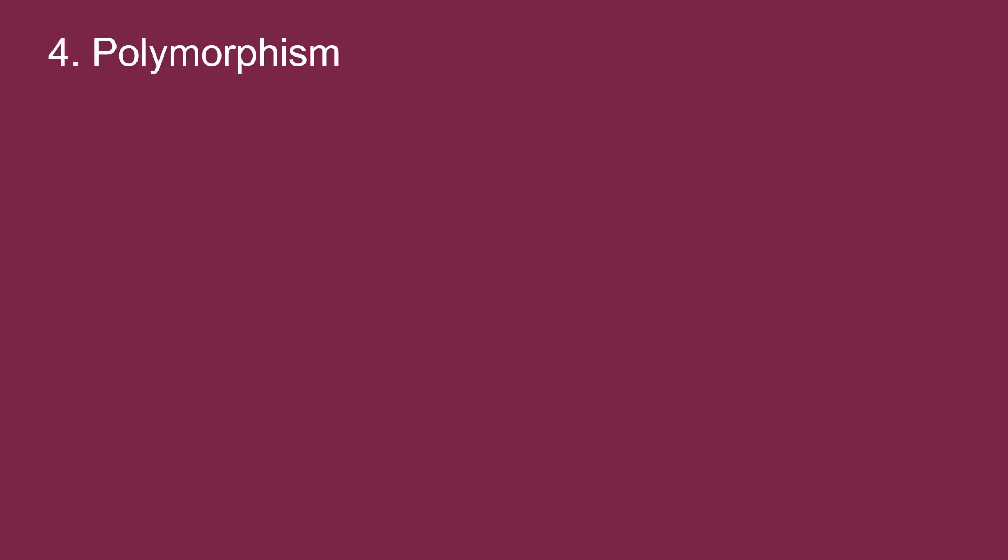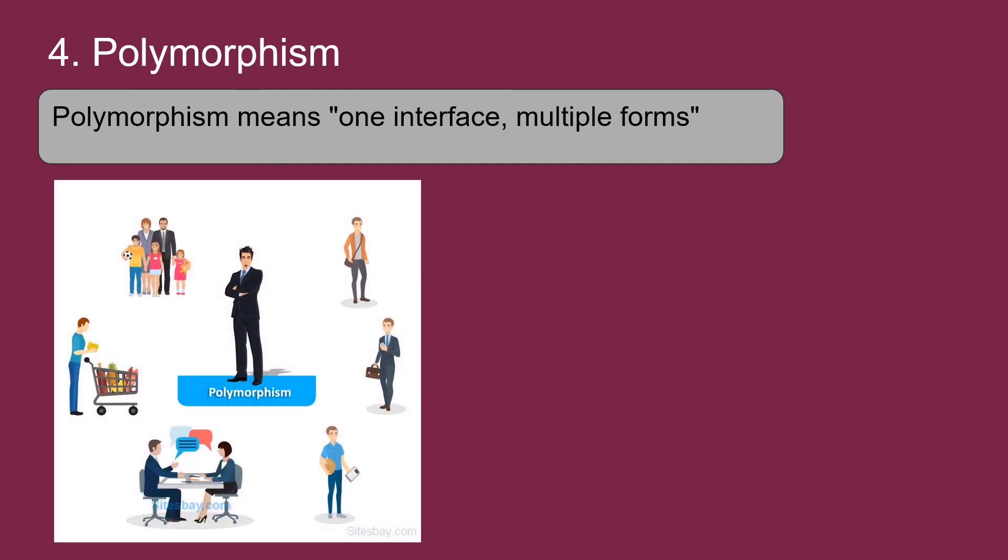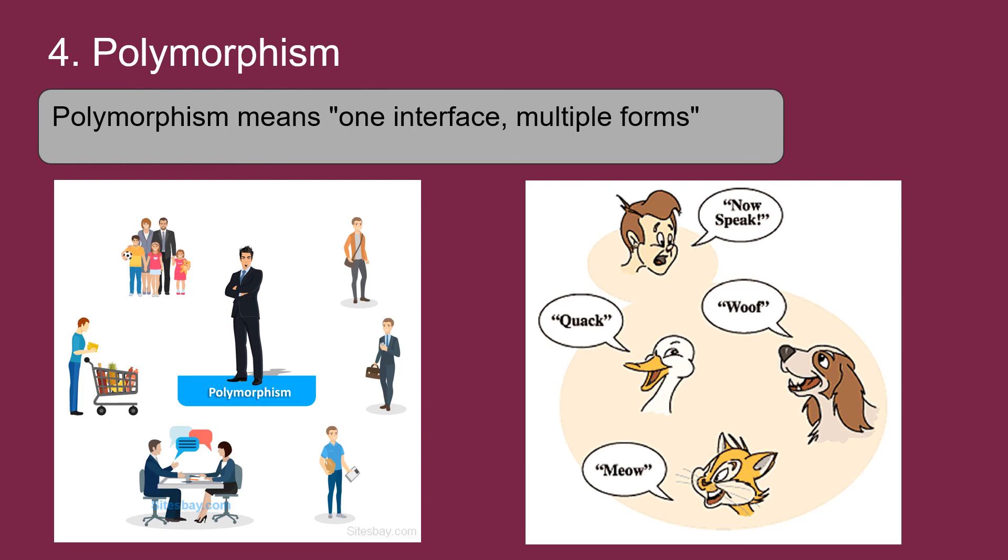Now the last feature of OOP is polymorphism. Poly means many and morphism means form, that is many forms. Let's take a real life example of polymorphism. Man is only one but he takes multiple roles like he is a dad to his child, he is an employee, a salesperson and many more. Another example is if you ask animal to speak, they speak in different ways like dog barks, duck quacks, but we call it as speak for both.